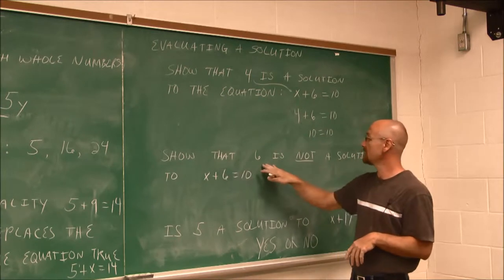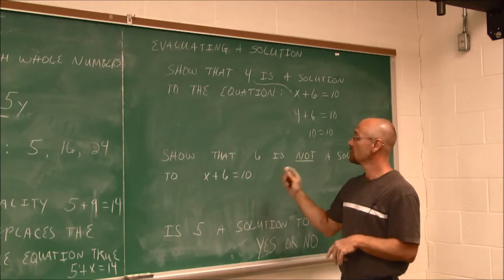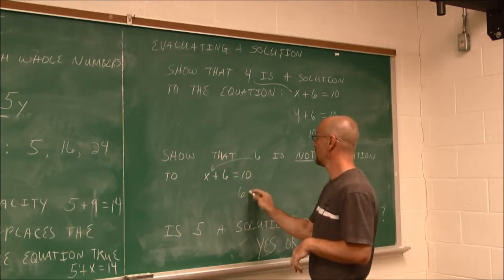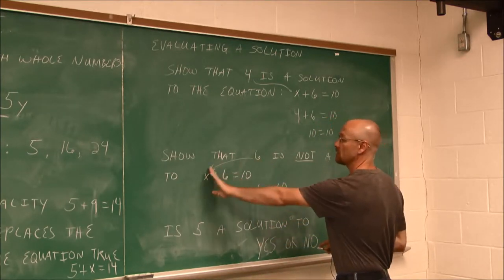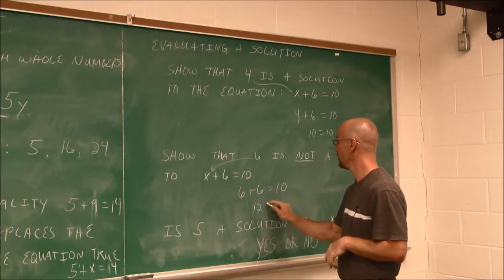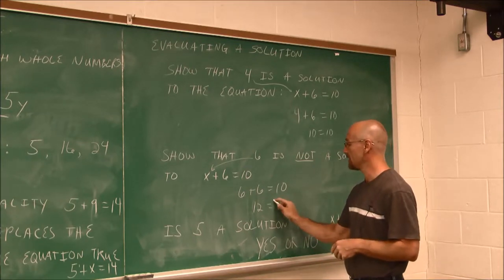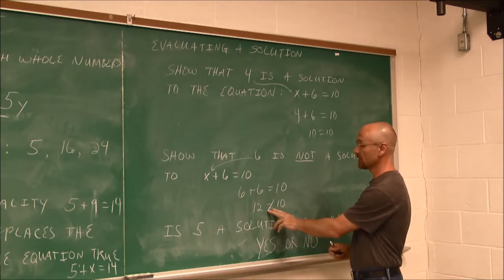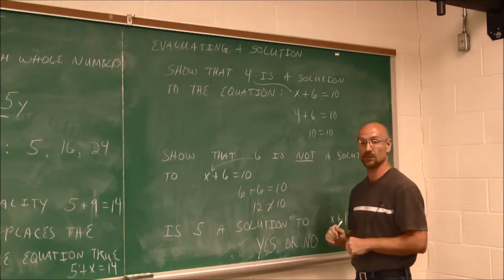This one says show that 6 is not a solution to x plus 6 equals 10. So I'm going to show by substituting, evaluating this. 6 plus 6 equals 10. I just evaluated this x, took it out, put 6 in its place. Evaluation. 6 plus 6 is 12. Does 12 equal 10? Obviously not. These are two different constant numbers. They're not equal to each other. So I can say, look here, 12 is not equal to 10. So no, this is not a solution.